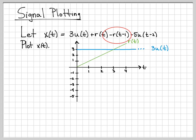Minus r(t-1) is also a ramp. It doesn't turn on until time 1, and it has a slope of negative 1. So if we were going to plot this component, it would look like this. It turns on at time 1, and it has a negative slope, so it goes downwards to the right.